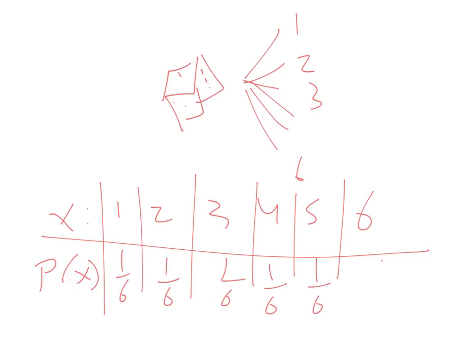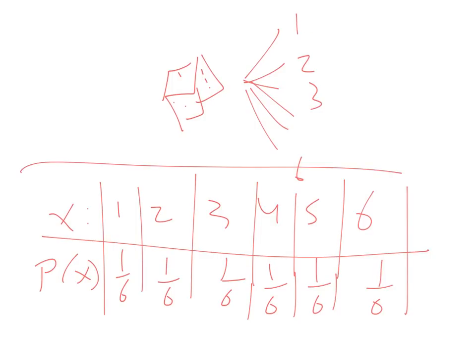When you add all these probabilities — the probability of one, two, three, four, five, and six — the sum should be one, because in any probability experiment the sum of all outcome probabilities must equal one. You can notice the same was true in the previous mobile phone example: the sum of all the probabilities must be one.